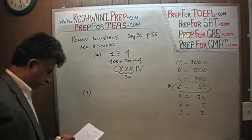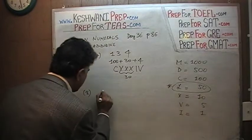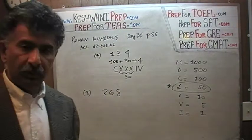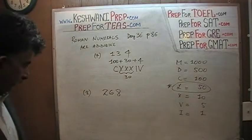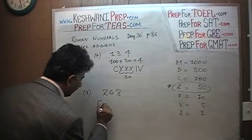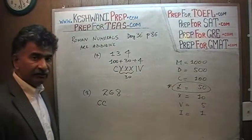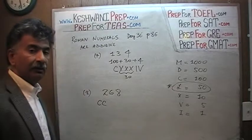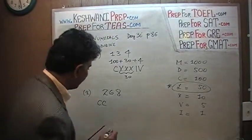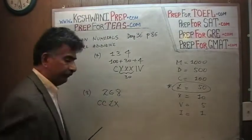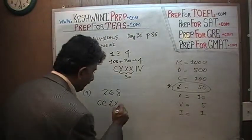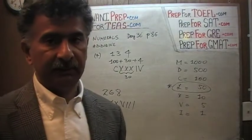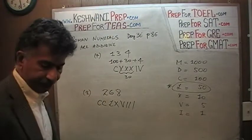Number eight: two hundred and sixty-eight. See if you can manage it on your own. Two hundred is simply a hundred and a hundred — CC. Sixty is fifty plus ten — L and X. And eight is five plus one plus one plus one — VIII. So: CC, LX, VIII. Two hundred and sixty-eight.